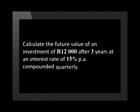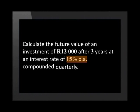Did you see that it worked out to be a better investment? Let's see how much more we would earn if the interest was compounded quarterly. Calculate the future value of an investment of 12,000 rand after three years at an interest rate of 15% per annum compounded quarterly.